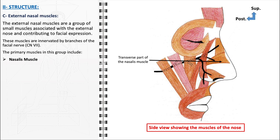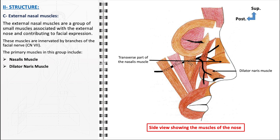The nasalis muscle is one of the primary muscles in this group, consisting of two parts: the transverse part and the alar part. The transverse part compresses the nasal aperture, reducing the size of the nostrils, while the alar part dilates the nostrils, aiding in deep inhalation. This muscle is crucial for regulating airflow through the nasal passages. The dilator naris muscle is specifically involved in the dilation of the nostrils, especially important during deep breathing, physical exertion, or heightened emotional states where increased airflow is necessary.